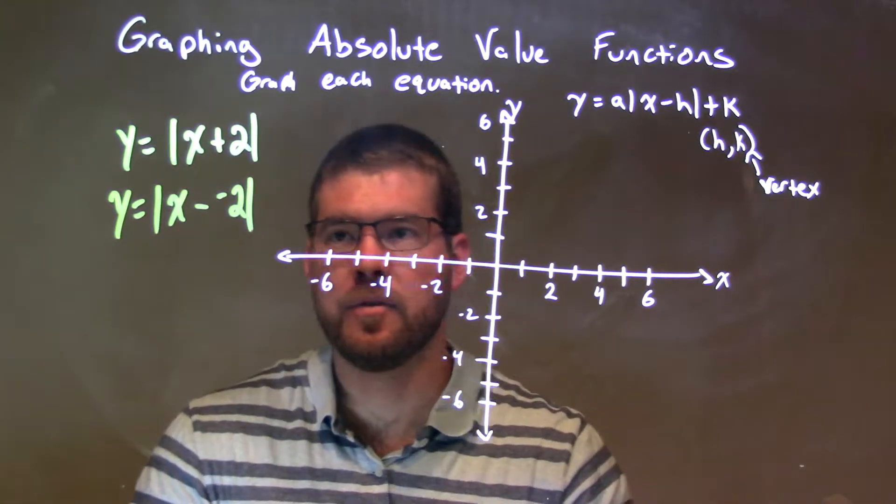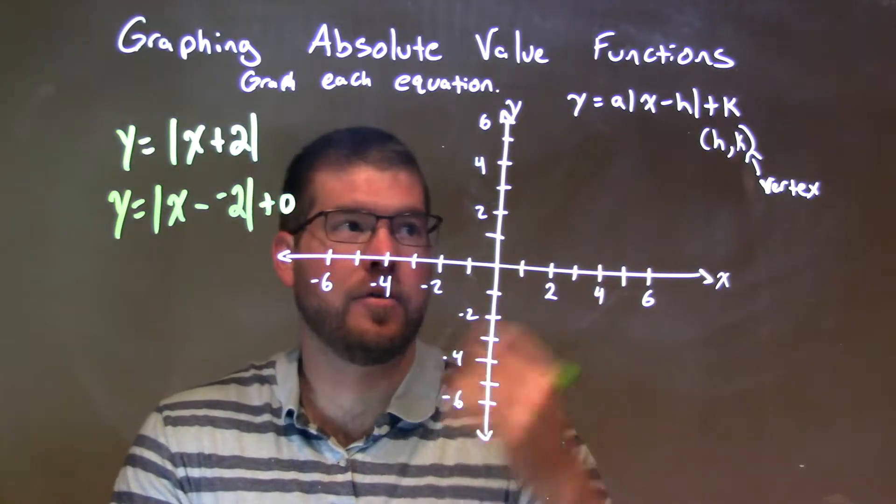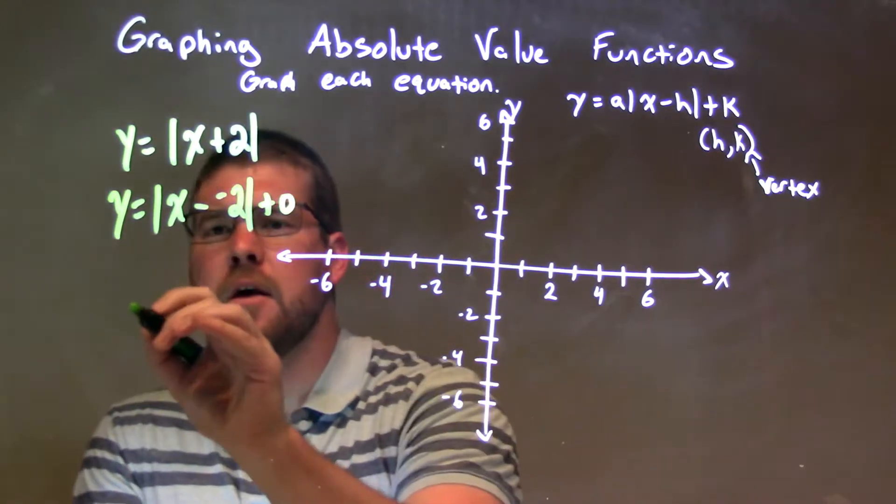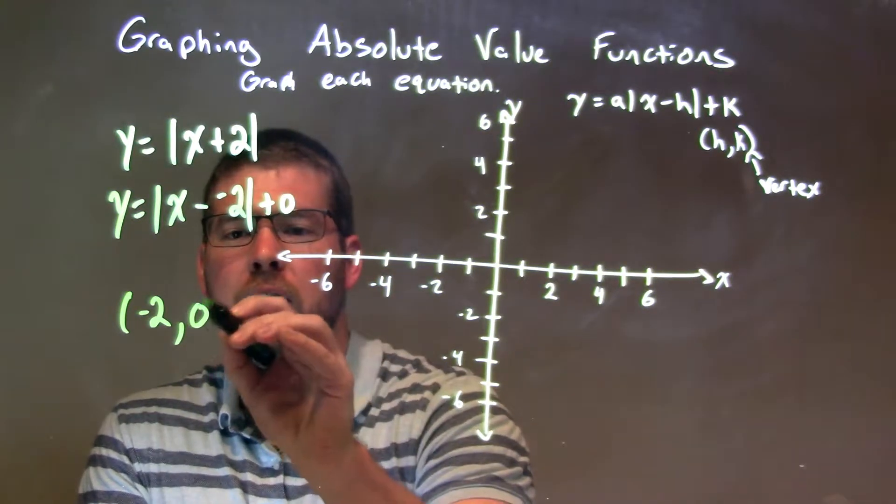Then, there's going to be my little plus 0. That's not written out there, but there's my k value. So, our vertex is just the negative 2, which is our h, and 0 being our k.